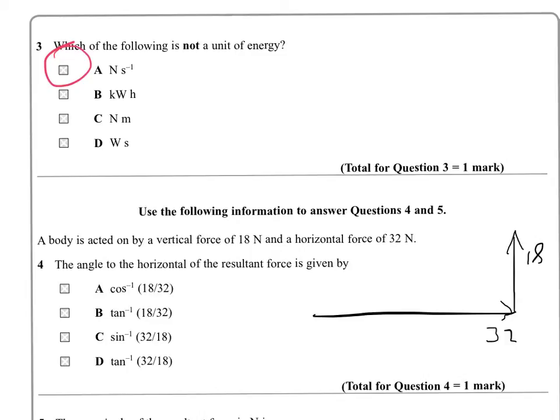We've got a vertical force of 18, doesn't matter whether we draw it above or below the horizontal. A horizontal force of 32 newtons, again doesn't matter left or right. But we're particularly interested in this resultant and its angle. Specifically, it says to the horizontal, so it's this angle we're interested in.